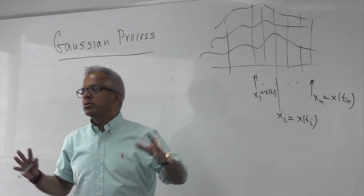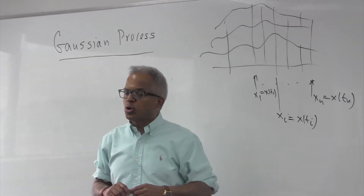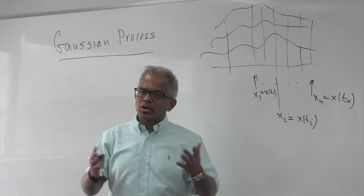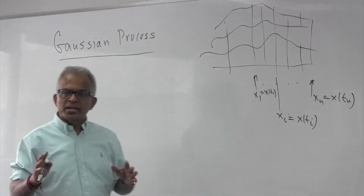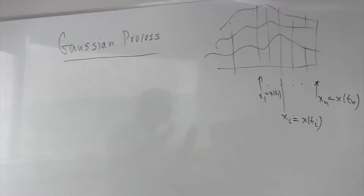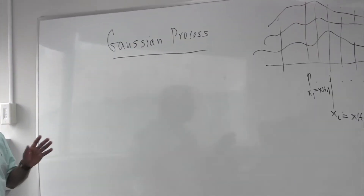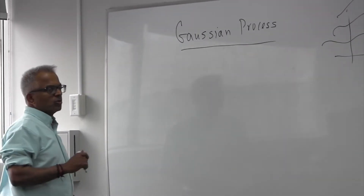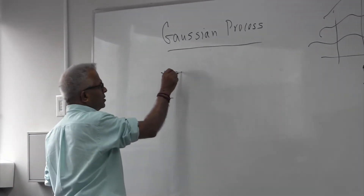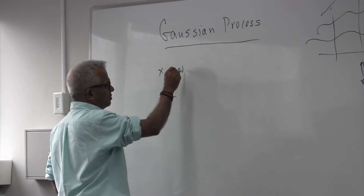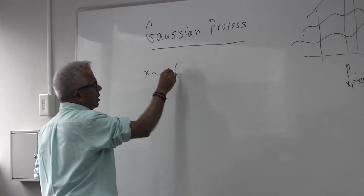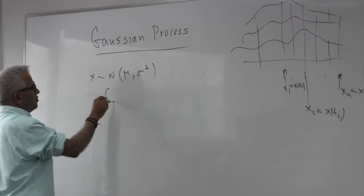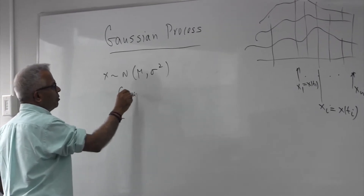The real question is: what do I mean by n random variables being jointly Gaussian? Let me quickly derive that from what we know, which is the case of one random variable. We call x to be Gaussian with some mean and variance if the density function has a specific form.